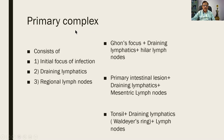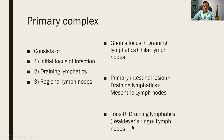You can get a primary complex not only in the lung. In the lung, the Ghon's focus along with the draining lymphatics and hilar lymph nodes constitutes the primary complex of the lung. In the intestine, an intestinal ulcer along with the mesenteric lymph nodes forms the intestinal primary complex. The tonsil with the draining lymphatics of Waldeyer's ring and regional lymph nodes is another example. The primary complex in the lung is called the Ghon's complex.